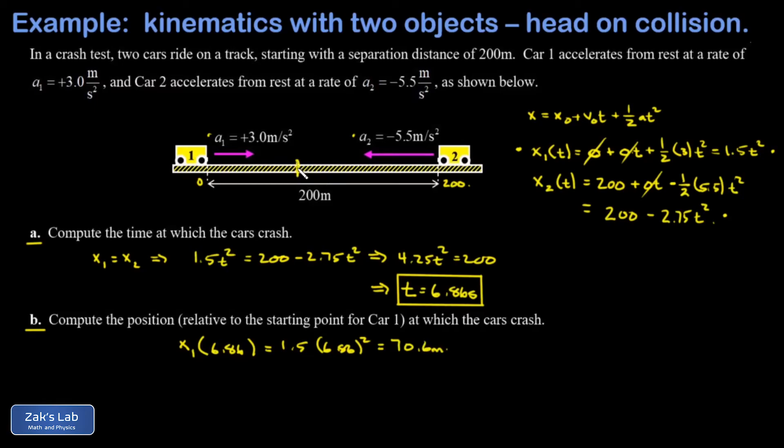So the crash happens about 70.6 meters closer to the starting position of car one because it wasn't accelerating as fast. Technically we're done with the problem, but I always go back and check the position of the other object to make sure it agrees. What's the position of car two when we plug in 6.86 seconds? That's 200 minus 2.75 times 6.86 squared, and this agrees with my first answer giving me 70.6 meters. Now I am very confident I have the right answer.